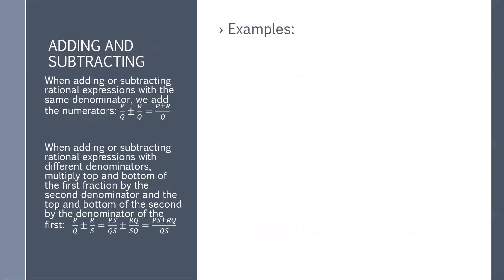When adding or subtracting rational expressions with the same denominator, we add the numerators. So p over q plus r over q is going to be p plus r over q.